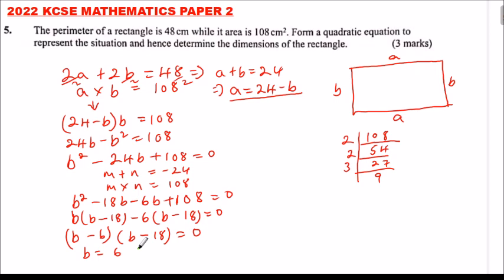So it is 24 minus 6 or 24 minus 18. So this will give us a is either 18 or it equals 6.